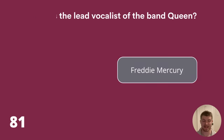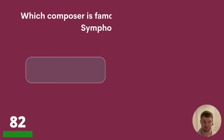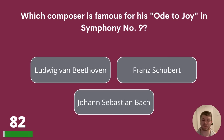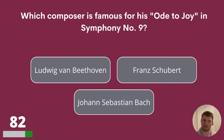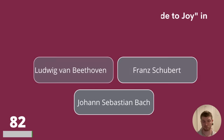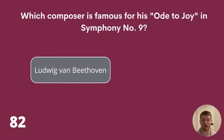Question 82. Which composer is famous for his Ode to Joy in Symphony No. 9? Ludwig van Beethoven, Franz Schubert, or Johann Sebastian Bach? The answer is Ludwig van Beethoven.